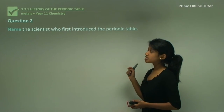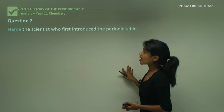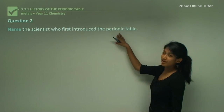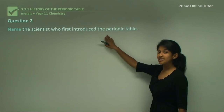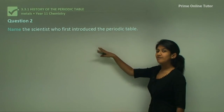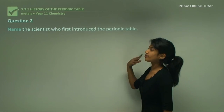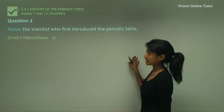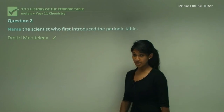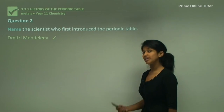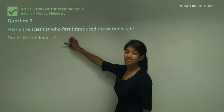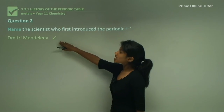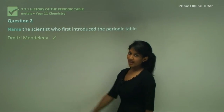Question 2 asks: name the scientist who first introduced the periodic table. This is quite easy — it's Dmitri Mendeleev. This question says 'name' and is worth one mark, so you simply write the name.